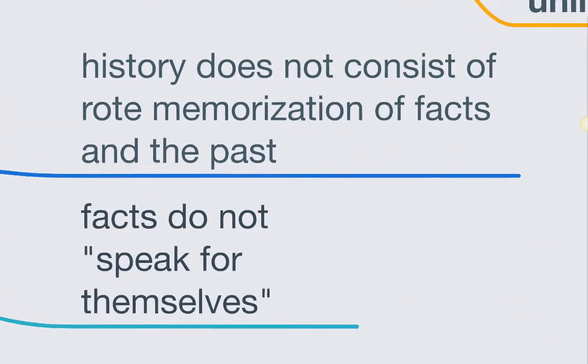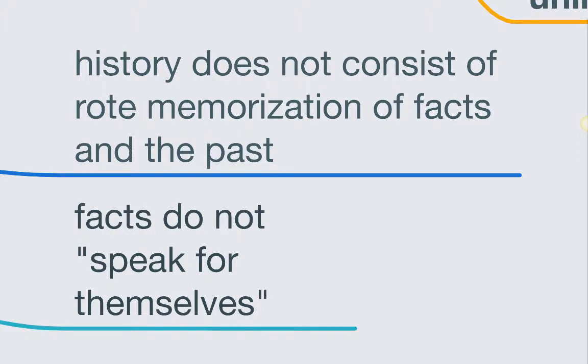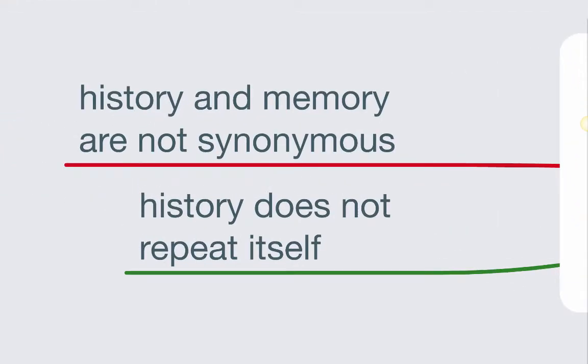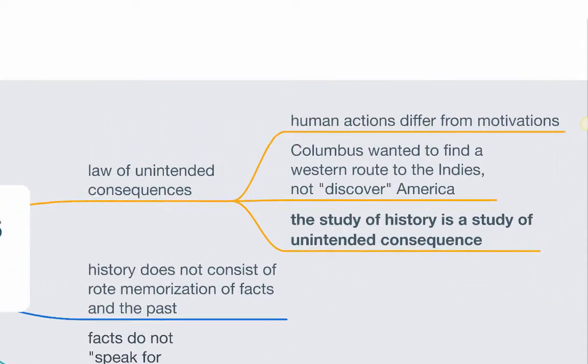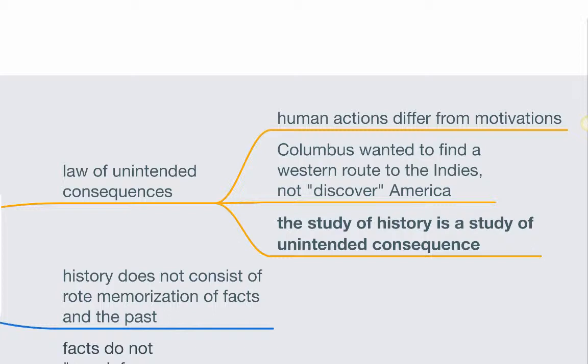As we'll see through these lectures, history does not consist of rote memorization of facts about the past, and those facts do not speak for themselves. History does not repeat itself, nor can we draw lessons from these supposed repetitions. And history and memory are not synonymous — they are, in fact, separate and often very antithetical to each other. Among the most important realities of historical study is what historians sometimes call the law of unintended consequences: the fact that consequences of human actions often differ sharply from the motivations of those who acted.